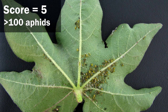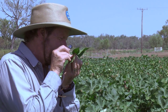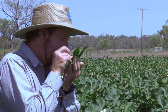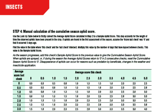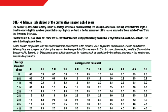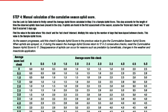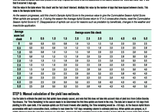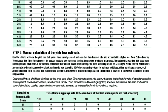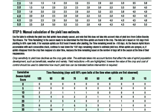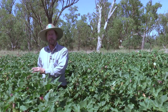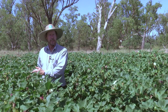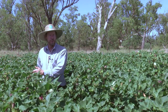Record the score for each leaf and work out an average score for that check. You can then use a lookup chart in the cotton pest management guide to convert the sample score for the last check and the sample score for this check into a cumulative score, and then look up the potential yield loss if that population continues. That provides a good basis for deciding whether the aphid population needs control for yield loss.